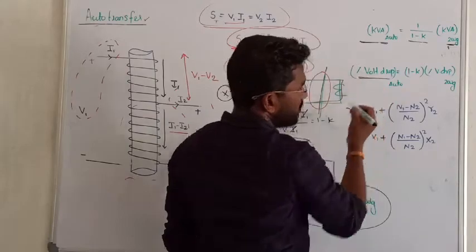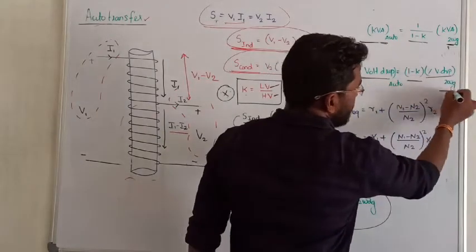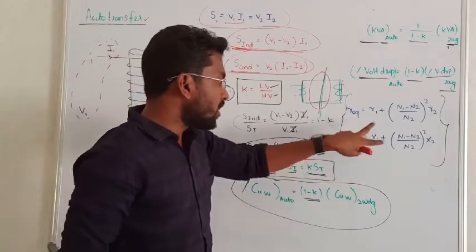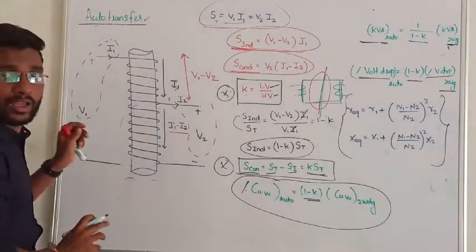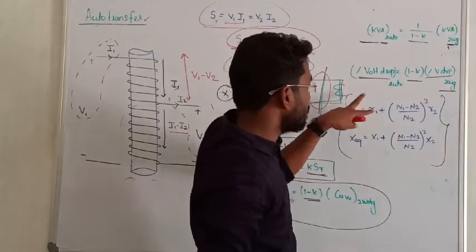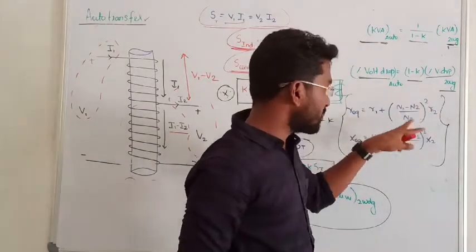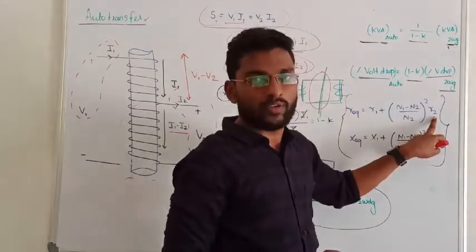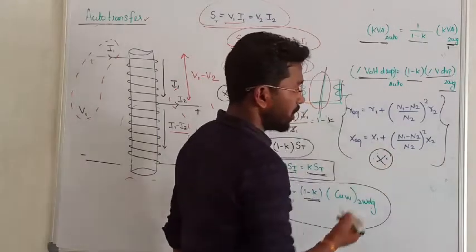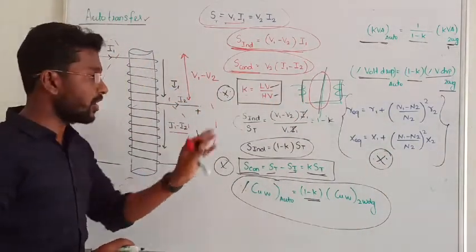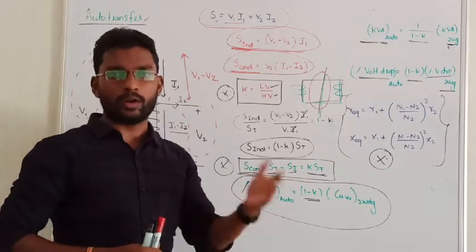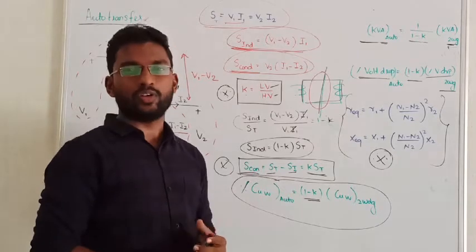The voltage drop of the autotransformer equals (1 minus k) times the voltage drop of the two-winding transformer. The equivalent total resistance referred to the primary of the autotransformer is R_equivalent = k times R, where R = R1 plus (N2/N1) squared times R2, with N2/N1 being the turns ratio and R2 the resistance at the secondary side. These derivations are skipped but the relations should be remembered. Thanks for watching.